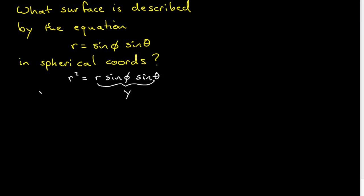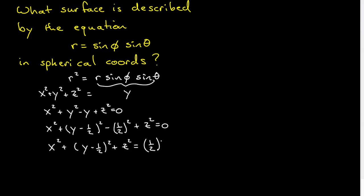And r squared, of course, is equal to x squared plus y squared plus z squared. Now we have something we can deal with. We move the y over to the other side. You now complete the square. So I have y minus a half squared. Then you have to subtract back off the one-half squared that you'll get when you square that. Plus z squared. And that will give me x squared plus y minus a half squared plus z squared equals one-half squared.